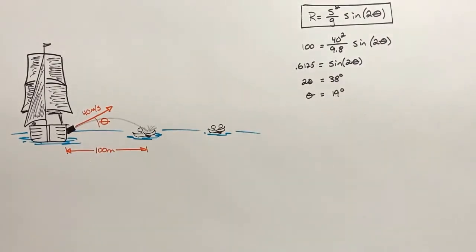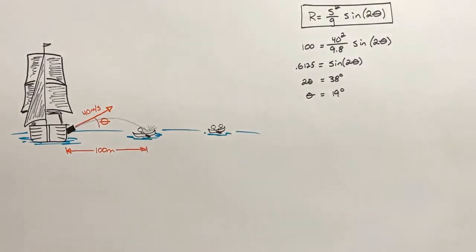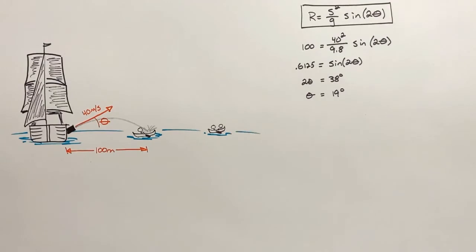So if the cannon is fired at 19 degrees above horizontal, the cannon shell will travel through the air and strike the canoe. There's actually a second angle that the cannon can be fired at and still hit the canoe. To find that other angle, we need to have a better understanding of the range equation and, just as importantly, we need to look at the unit circle.